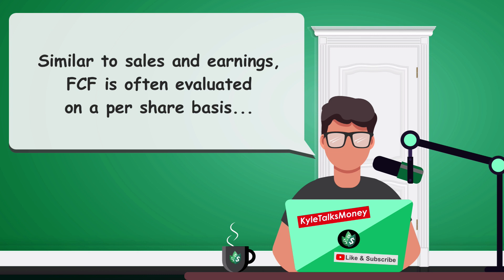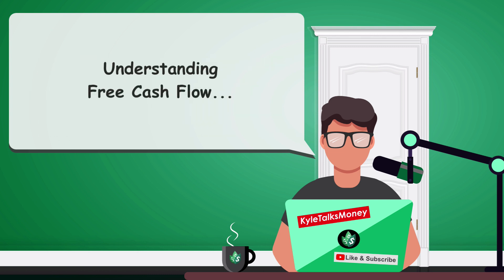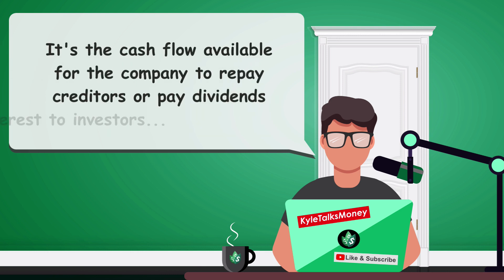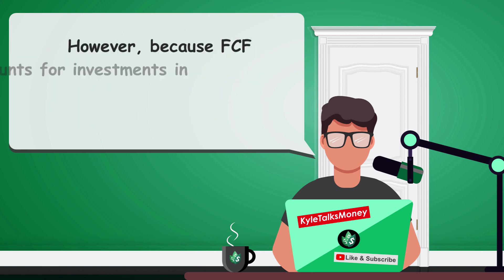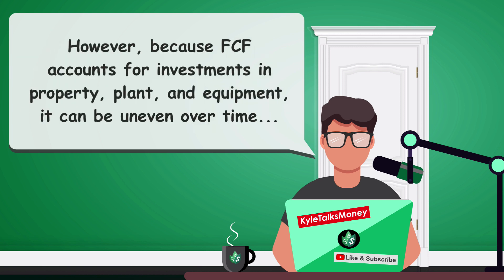Similar to sales and earnings, free cash flow is often evaluated on a per share basis to evaluate the effects of dilution. Free cash flow is the cash available for the company to repay creditors or pay dividends and interest to investors. Some investors prefer free cash flow or free cash flow per share over earnings or earnings per share as a measure of profitability, because these metrics remove non-cash items from the income statement. However, because free cash flow accounts for investment in property, plants, and equipment, it can be lumpy and uneven over time.